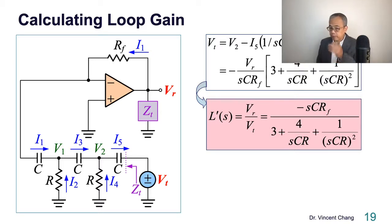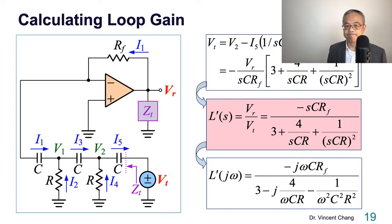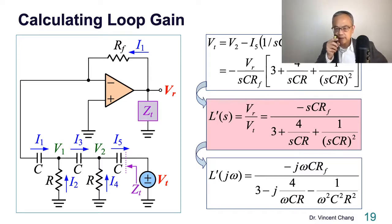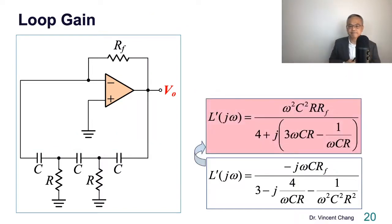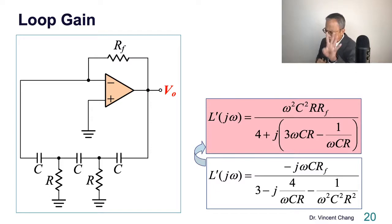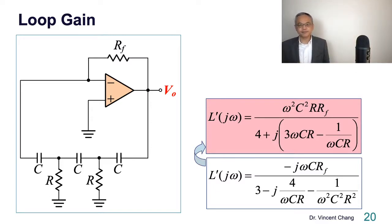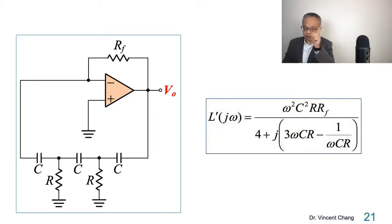The next step is to replace s with jω. The denominator of the loop gain looks a bit ugly, so let's rationalize the numerator and denominator by multiplying by jωCR. The real part of the denominator then becomes 4, giving us the loop gain expression.